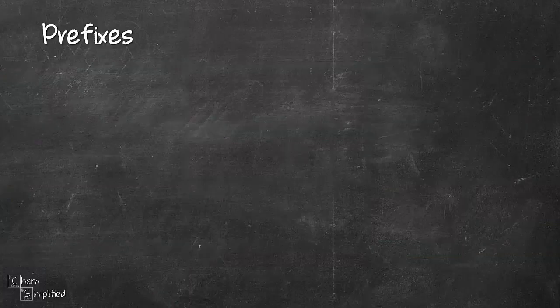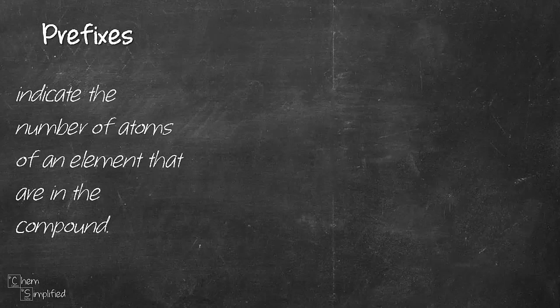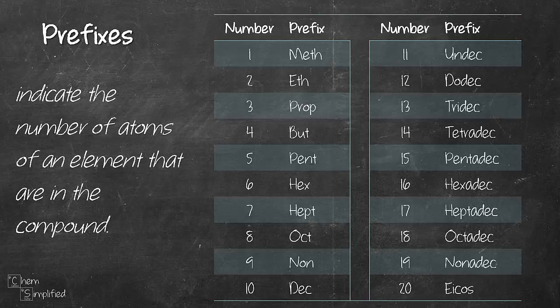So first things first, before we get started, we need to first know how to address the number of carbons in the compounds. So we're going to use prefixes. If you've gone through naming covalent or molecular compounds, you should already be familiar with these prefixes. Most likely you only need to know up to 10. However, just in case if you need to know up to 20, I've included them here as well. So are you ready to start naming our first compound?